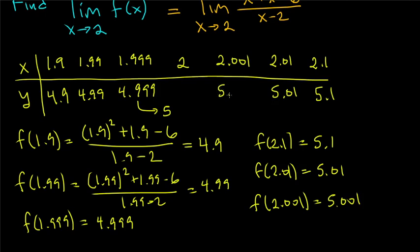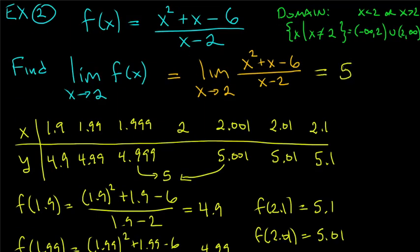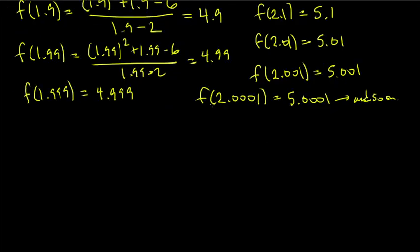Between 4.999 from the left and 5.001 from the right lies 5, so this limit is going to be 5. We calculated this limit numerically using a table of values. We can also do it graphically.